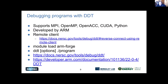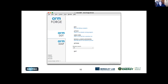The first tool is DDT — the Distributed Debugging Tool. It supports a bunch of different parallel programming models like MPI, OpenMP, OpenACC, and CUDA, and supports Python, C, Fortran, and C++. It was originally developed by a company called Allinea and is now owned by ARM. It has a remote client you can use instead of X11 forwarding or a remote session. Basically you just module load arm-forge and then run DDT against your program.